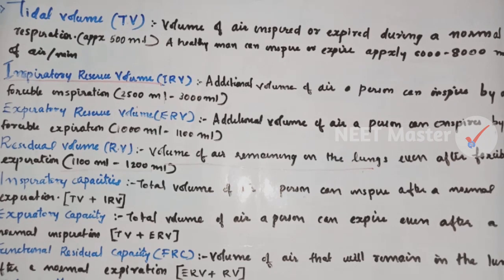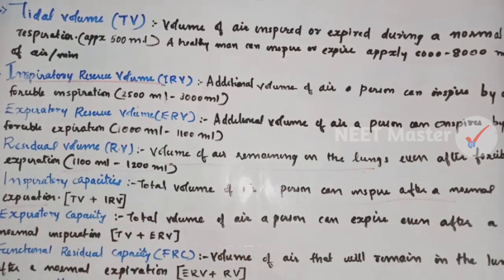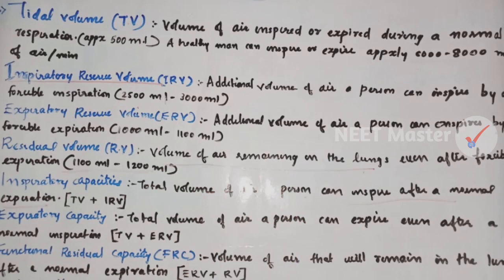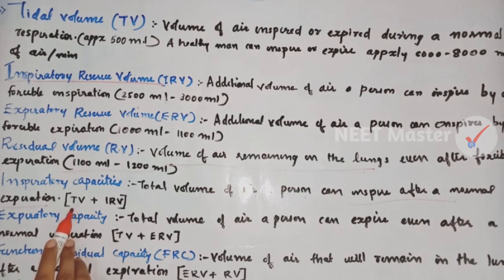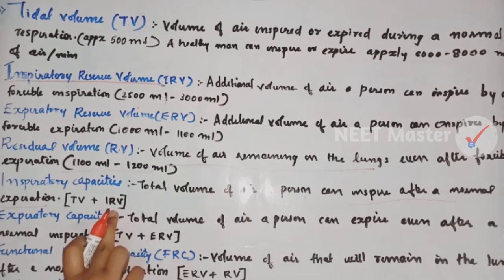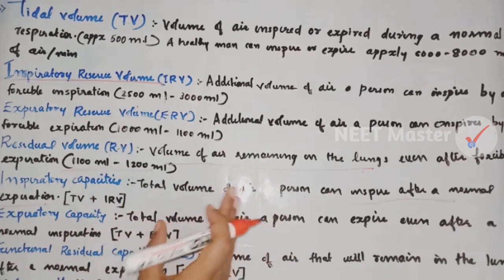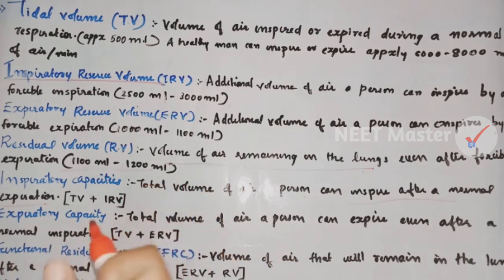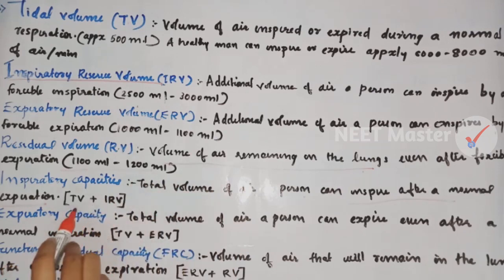Respiratory capacity. Inspiratory capacity is the total volume of air a person can inspire after a normal expiration. After a normal expiration, every volume of air a person can inspire is the inspiratory capacity. Inspiratory capacity equals TV plus IRV. So, TV plus IRV equals IC — inspiratory capacity is tidal volume plus inspiratory reserve volume.